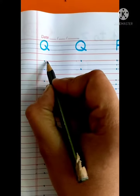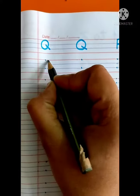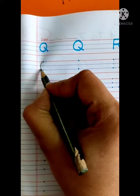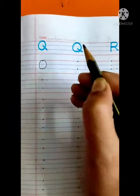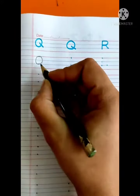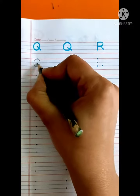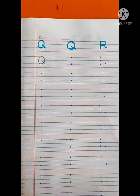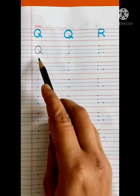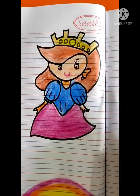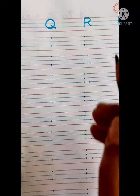So make circle on both dots. Like this. Then we will make small slanting line here. Like this. This is letter Q. Q for Queen.